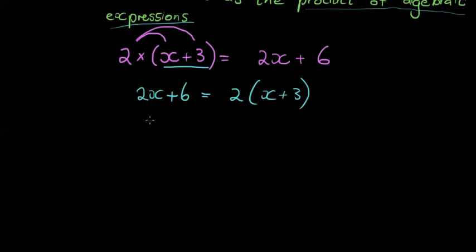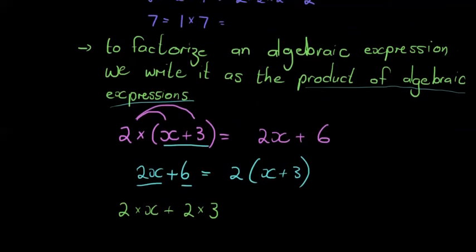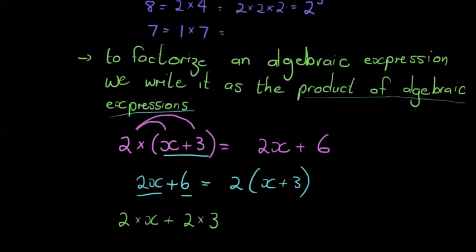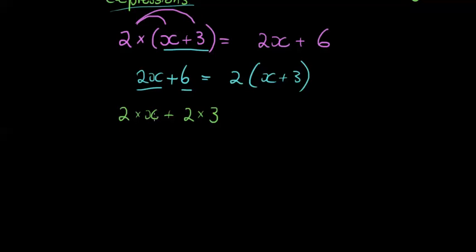This way of factorizing is called taking out a common factor — here's why. If I break up every term into its prime factors: the first term 2x becomes 2 times x, and the second term 6 becomes 2 times 3. Now what I can see is that both terms have a 2 in them.